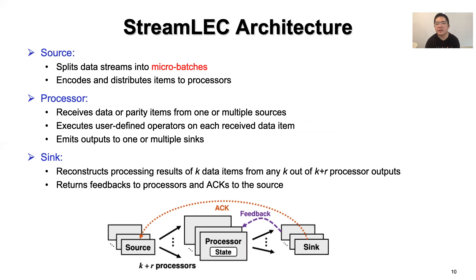StreamLake's architecture comprises three stages of workers: sources, processors, and sinks. Each source splits the data streams into different micro-batches, encodes and distributes data items on each micro-batch to multiple processors. Each processor receives data or parity items from one or multiple sources, executes user-defined operators on each received data item, and emits output to one or multiple sinks. Each sink aggregates the outputs from any K out of K plus R processors and reconstructs the processing results of the K data items. The sink also sends feedback to each processor and acknowledges the source once processing of a micro-batch finishes.